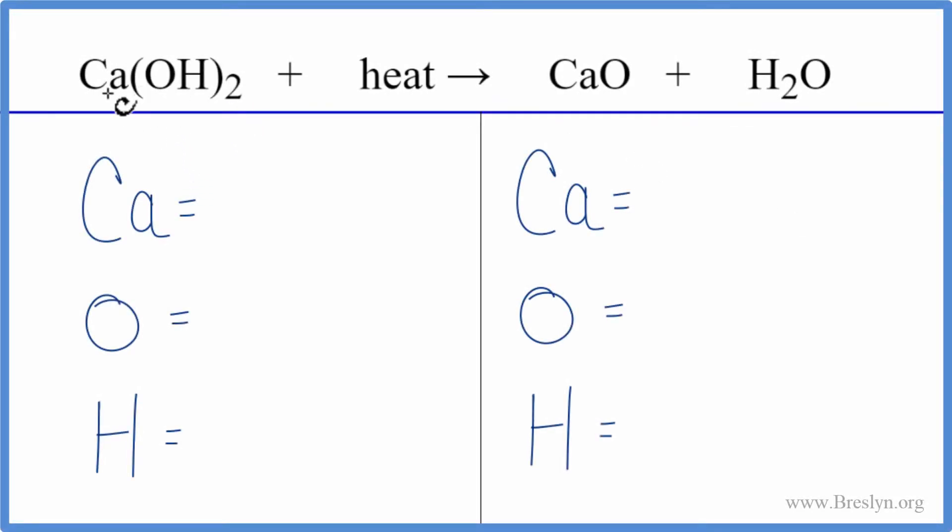In this reaction we have the decomposition of calcium hydroxide Ca(OH)2. So we're heating up the calcium hydroxide and it decomposes into calcium oxide and water. To balance it, let's count the atoms up on each side.